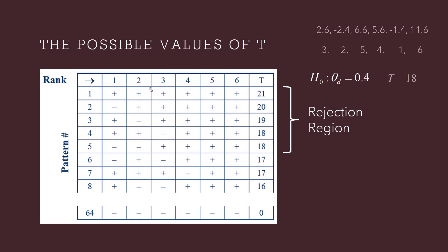What would happen if we hypothesize h equals 0.4? Subtracting 0.4 from the original scores gives adjusted scores. Looking at the ranks associated with those adjusted scores, if I add up the ranks for the positive scores — 3, 5, 4, and 6 — that gives me 18. I am now in the rejection region, so I reject 0.4. We did not reject 0.5 but we did reject 0.4, so we are 90% confident that the median of our differences in the population is greater than or equal to 0.5 — that is, the treatment is shifting the center of the distribution at least half a unit in the positive direction.